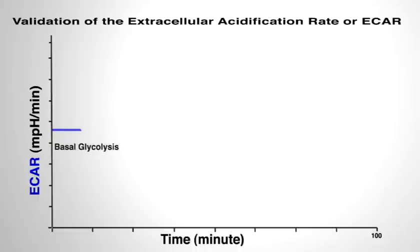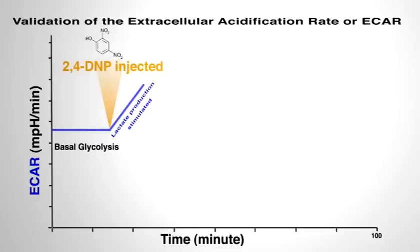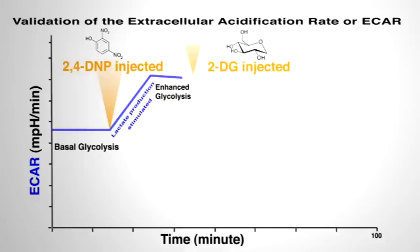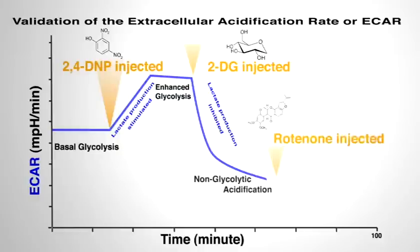In the same experiment, the extracellular acidification rate, or ECAR, of the A549 cells was also stimulated by 2,4-DNP. ECAR was then blocked by the addition of the glycolytic inhibitor 2-DG, verifying ECAR as a marker of lactate production and glycolysis.